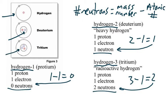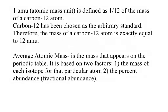Notice how isotopes are atoms of the same element — they're all hydrogens — but they differ in their number of neutrons. The mass number, abbreviated by the unit AMU (atomic mass unit), is defined based on using carbon-12 as an arbitrary standard.